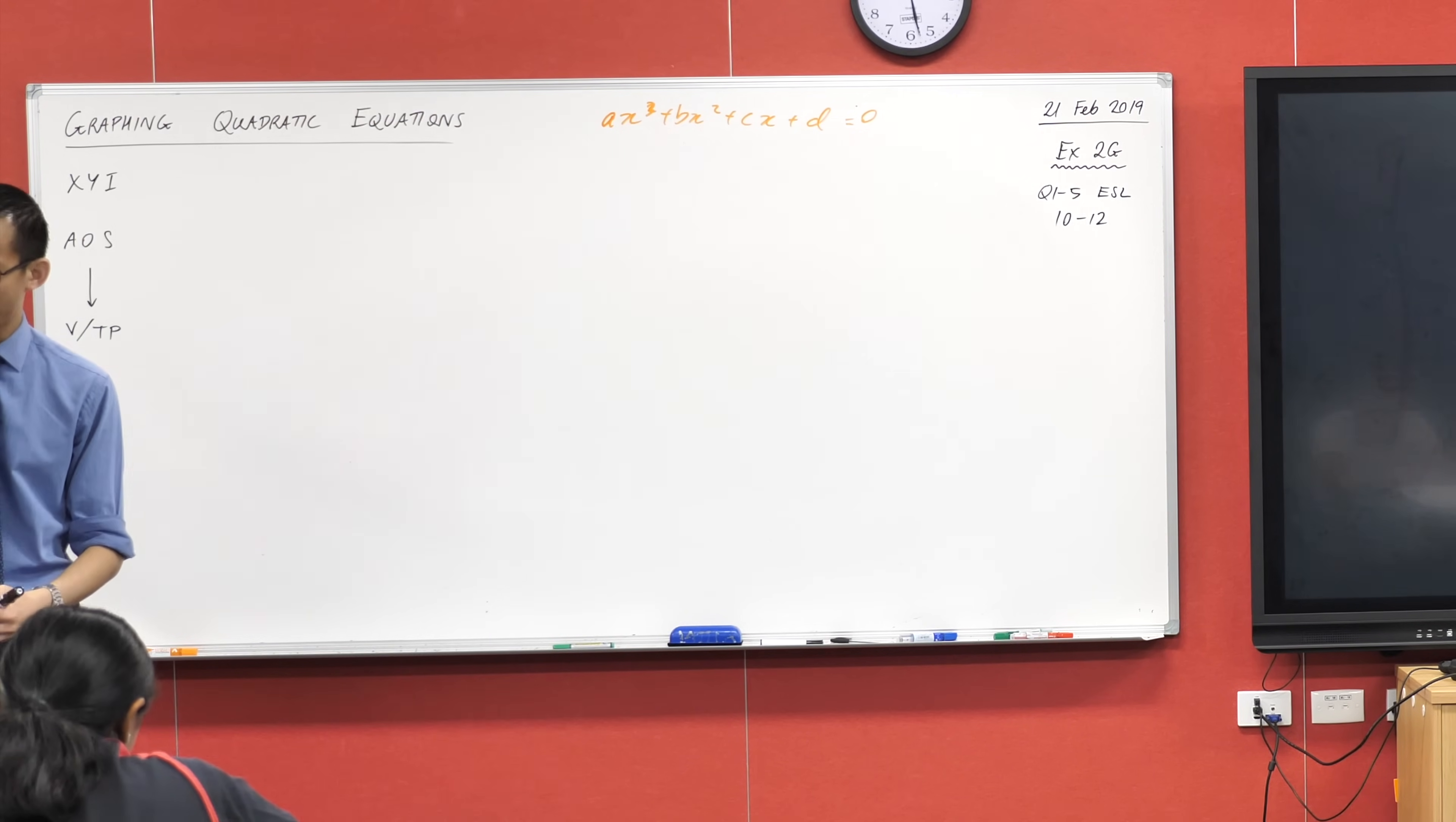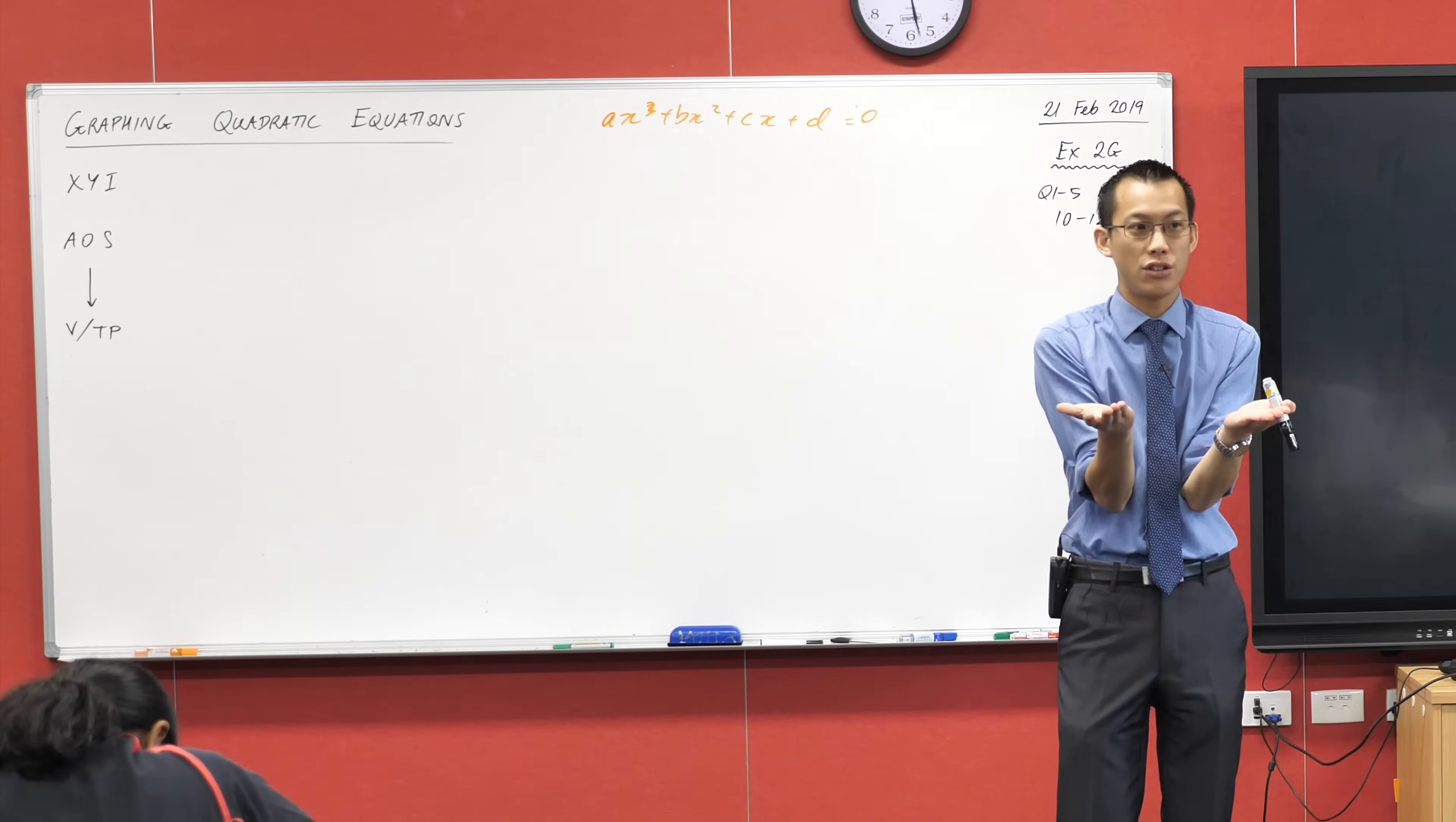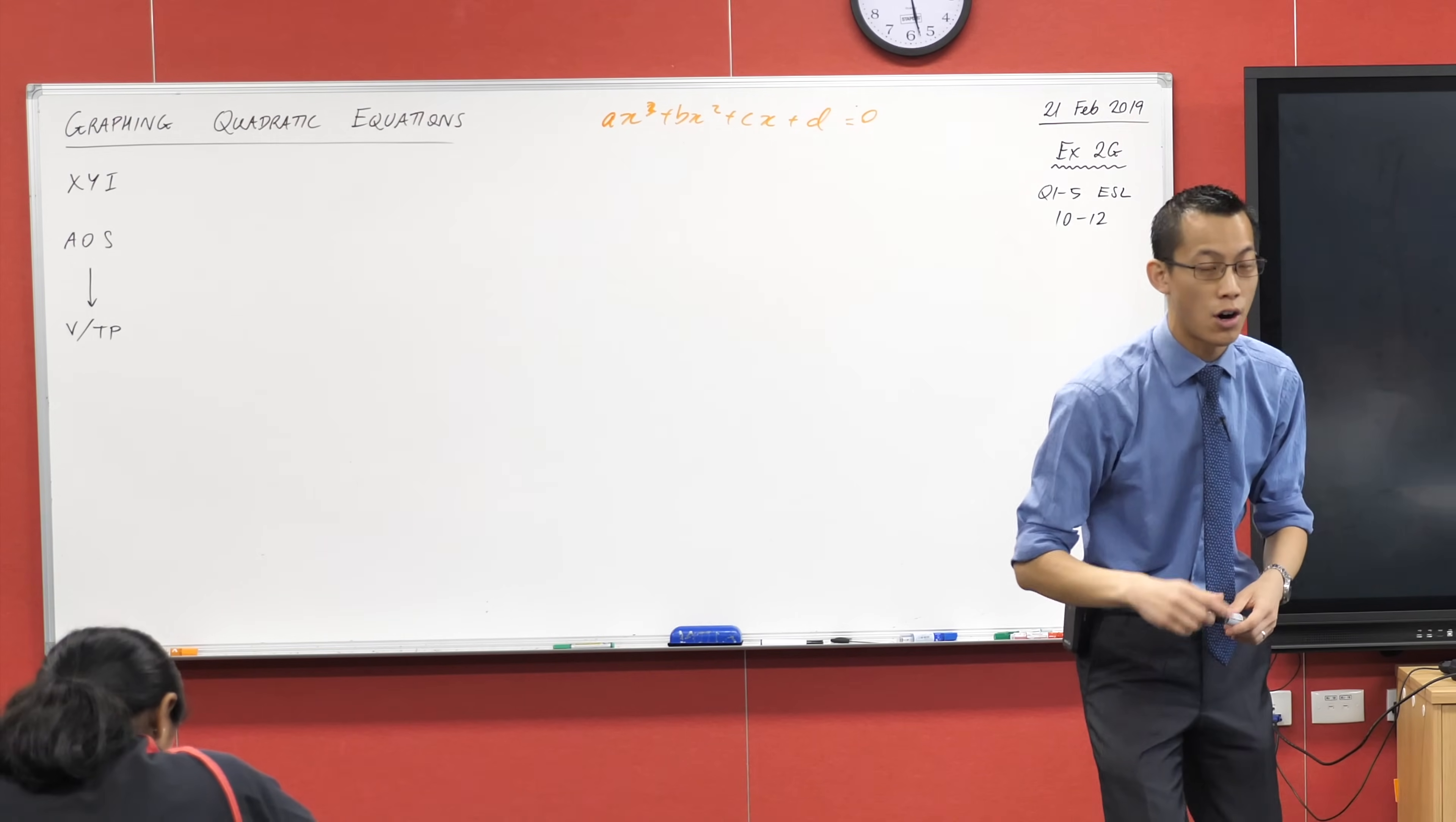When you use the quadratic formula, right, and you get two things out, what are those two things? Like suppose you put the quadratic formula, you put the numbers in, you got like three and negative two. What do those numbers actually signify? Yeah, on the graph.